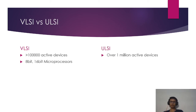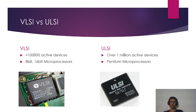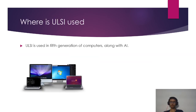Comparing VLSI vs ULSI: VLSI has greater than 1 lakh active devices, where ULSI has over 1 million active devices. VLSI has 8-bit or 16-bit microprocessors, where ULSI has Pentium microprocessors. Here is an image of a VLSI and ULSI processor.